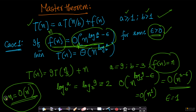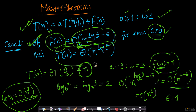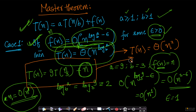From the definition of big-O, f(n) = n is big-O of n^(2 − ε) where ε = 1. So both conditions are satisfied: the recurrence is of the required form with a ≥ 1 and b > 1, and f(n) satisfies the Case 1 upper-bound condition.